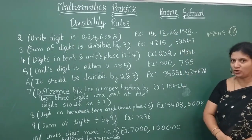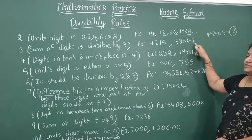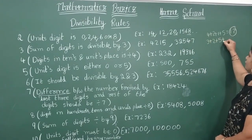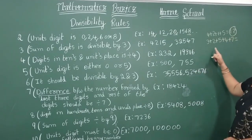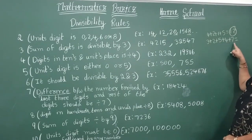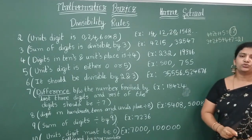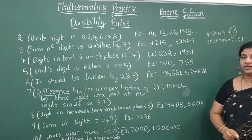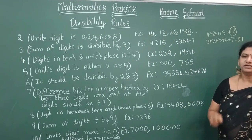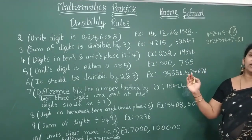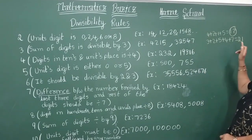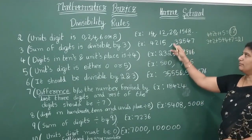Let's see one more example with a 5-digit number. Add all the digits: 3 + 2 + 5 + 4 + 7 = 21. Is 21 divisible by 3? Yes — 3 × 7 = 21. So there is no need to divide a five-digit or larger number. Just add the digits, check if the sum is divisible by 3, and if it is, then the whole number is divisible by 3.